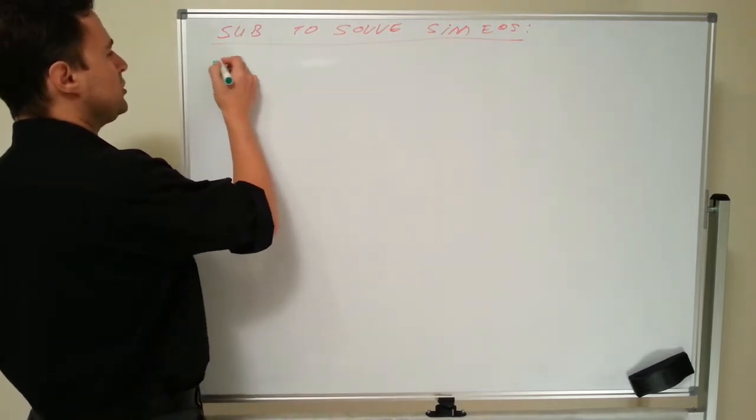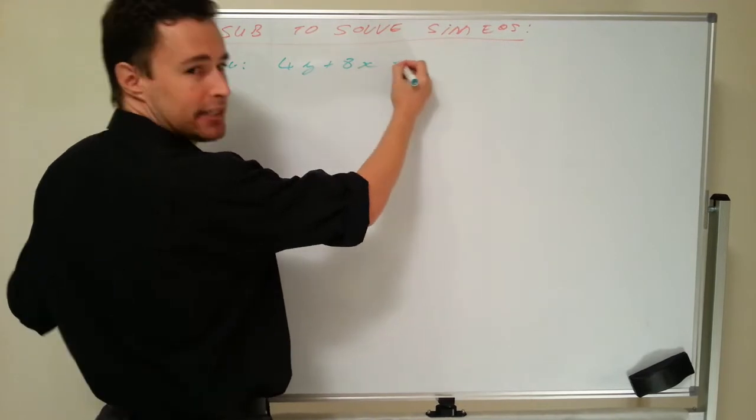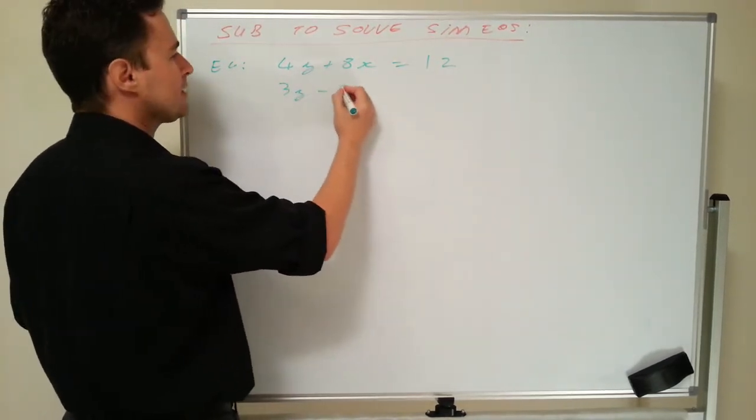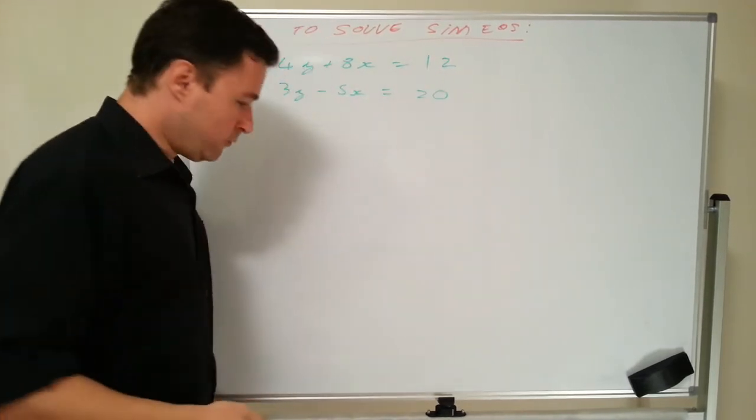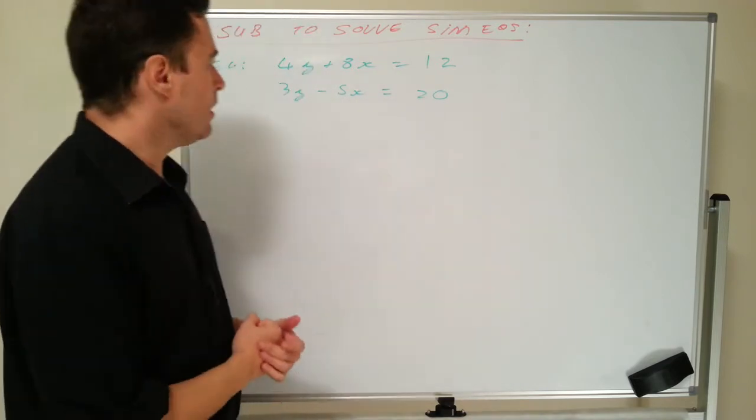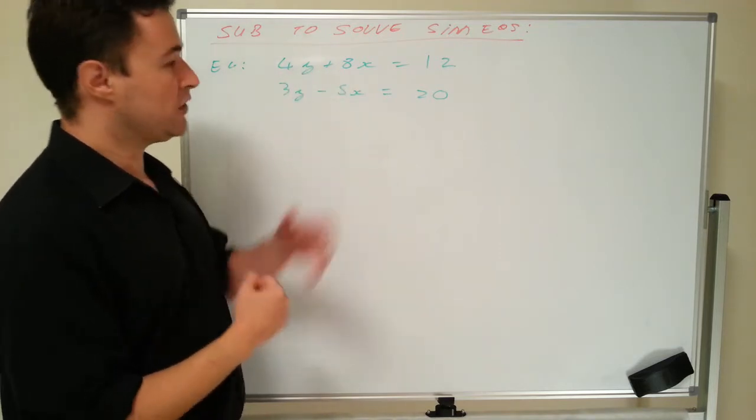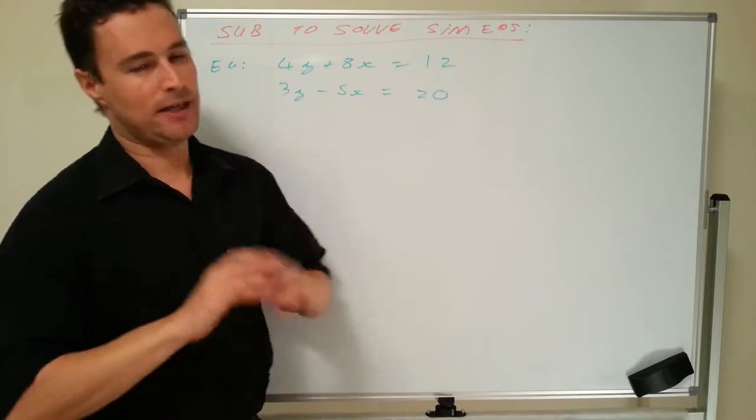Let's take a look at an example. 4y plus 8x equals 12, and 3y minus 5x equals 20. Now, if you've watched the other video on how to solve by cancelling, the first thing that you would look at is do I have any coefficients that are actually the same? Now look at this, 4 and 3, no. 8 and 5, no. So not the same.